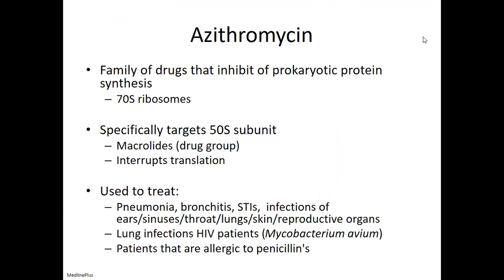The next most commonly prescribed antibiotic is azithromycin, which some of you may have had — if you've had pneumonia, bronchitis, ear infection, or sinus infection, this is a really commonly prescribed antibiotic. It's targeting the 70S ribosome. Why would this be a good antibiotic for a doctor to prescribe if they're pretty sure you have a bacterial infection but don't know what kind?